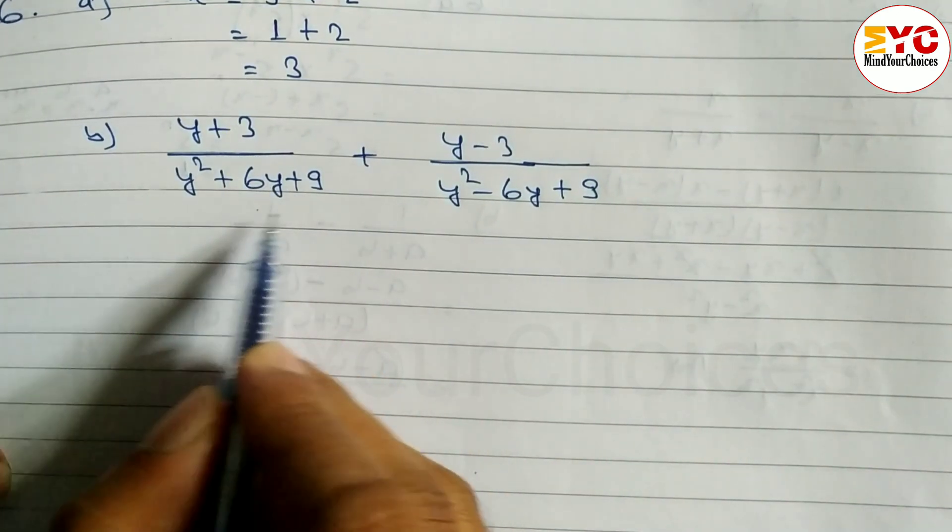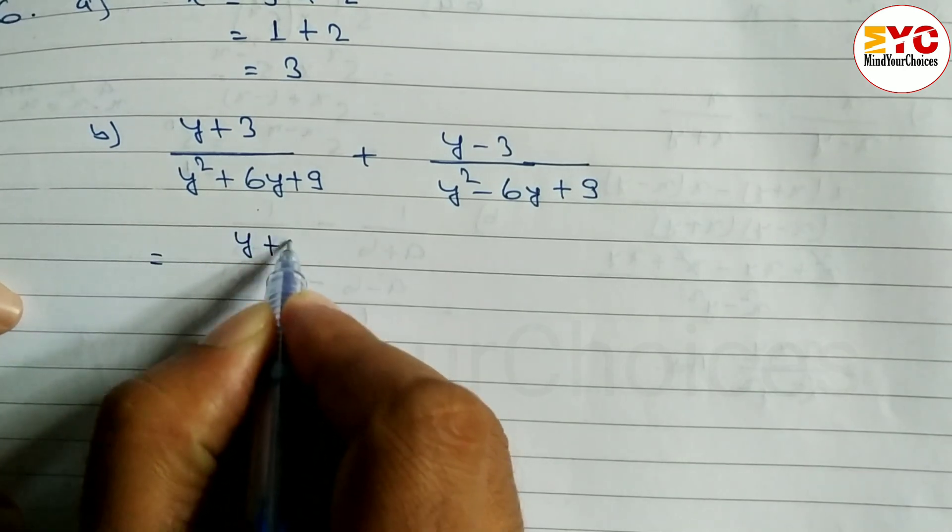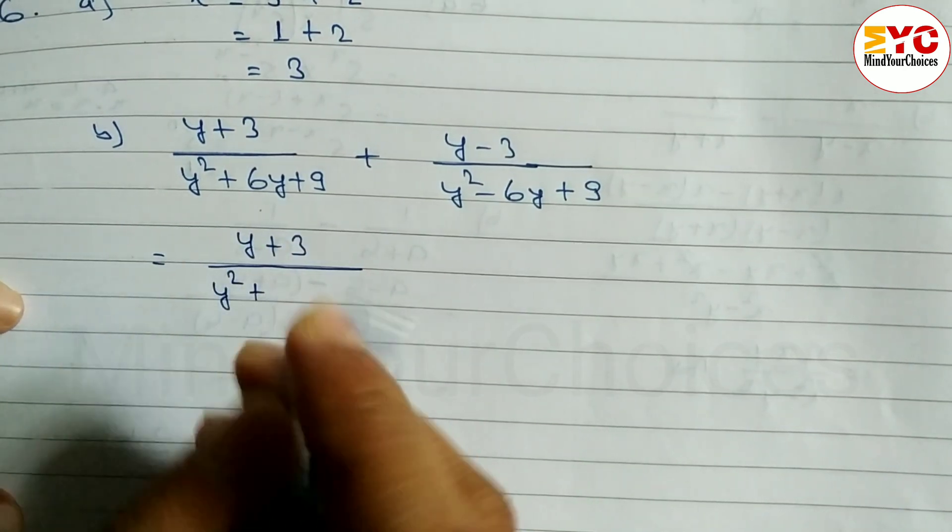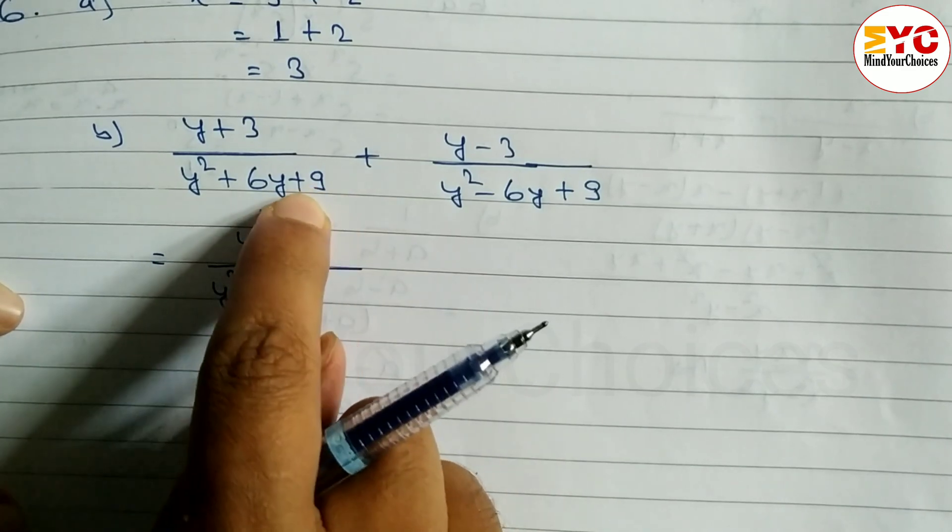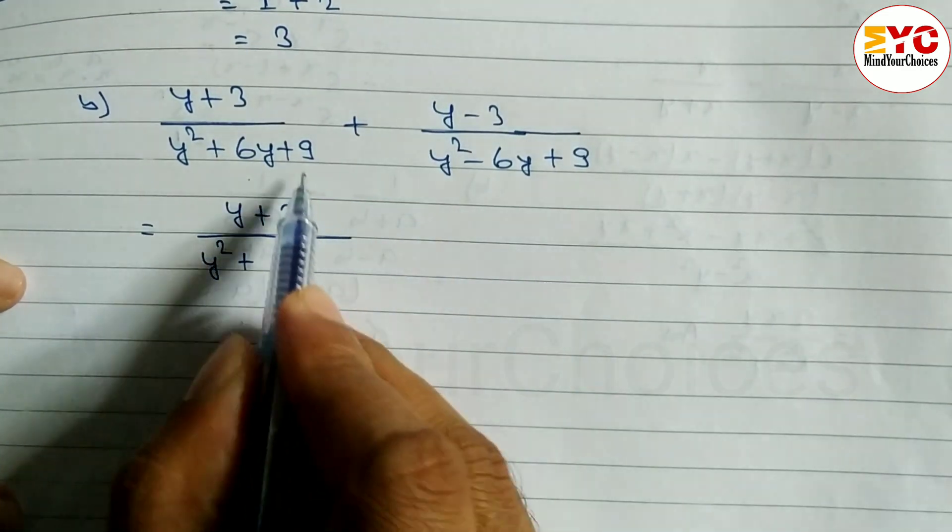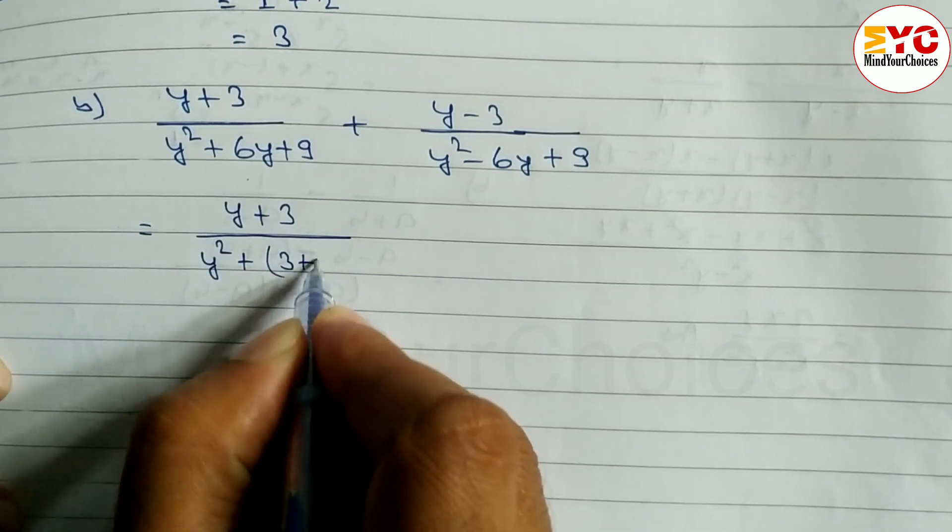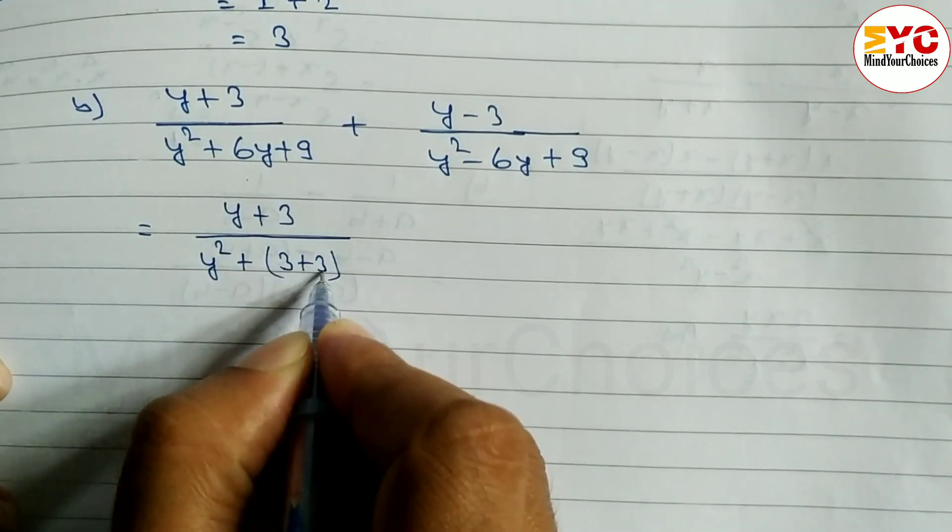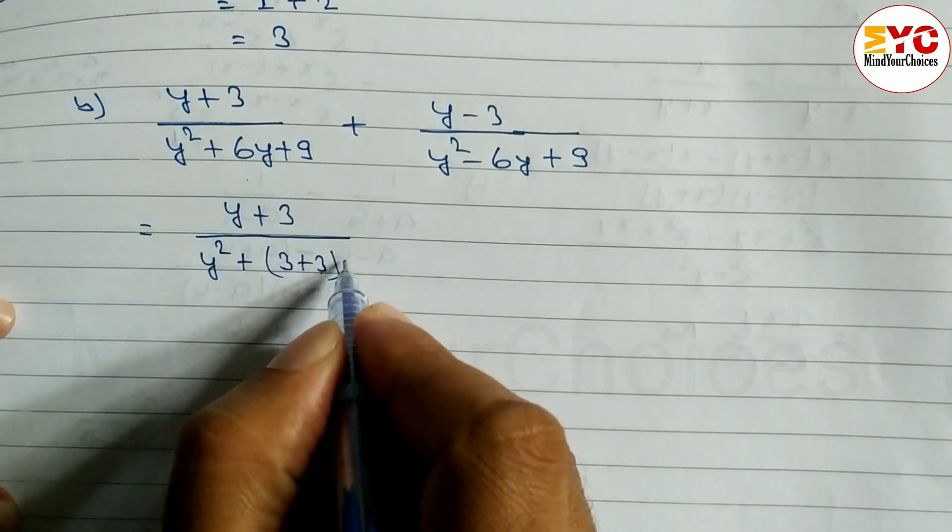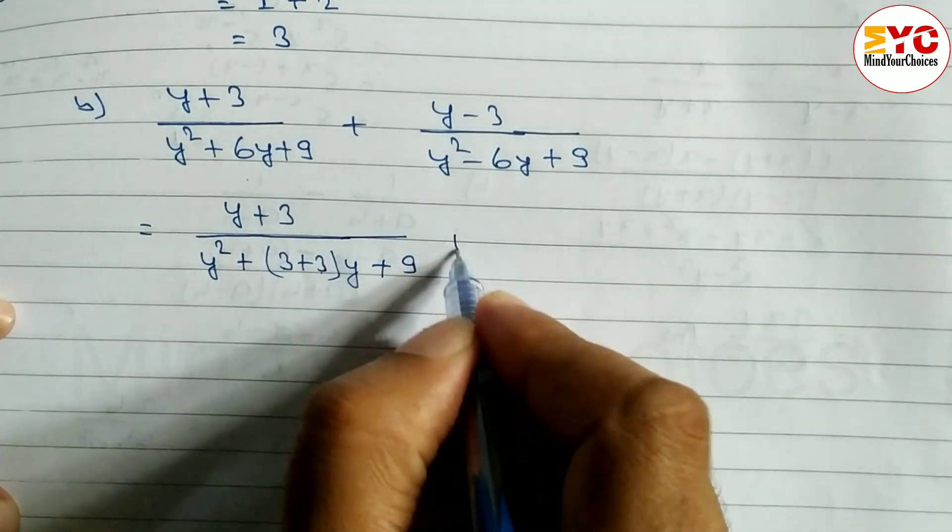First we factorize. For y square plus 6y plus 9, we need two numbers that multiply to give 9 and add to give 6. That's 3 plus 3. 3 times 3 equals 9, and they add to 6. So we write y from y square, plus 9.